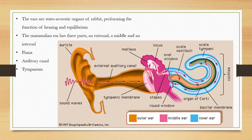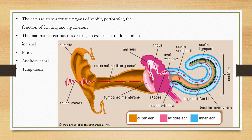The middle ear contains three ear bones called malleus, incus, and stapes. This cavity is called the tympanic cavity. The tympanic cavity communicates with the pharynx through a canal called the Eustachian tube.